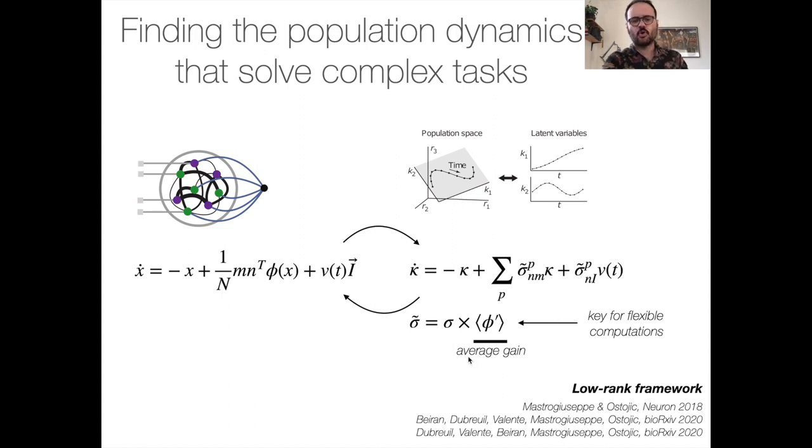The overlaps depend on two parts. One part, which is defined during training, which is the correlations between all these connectivity vectors. Another part, which changes dynamically, and might change, for example, in different contexts, which is the average gain.